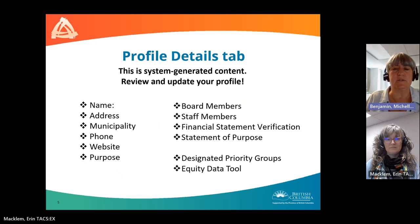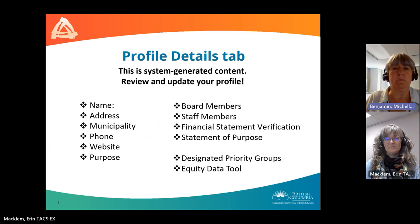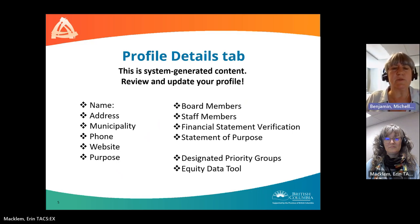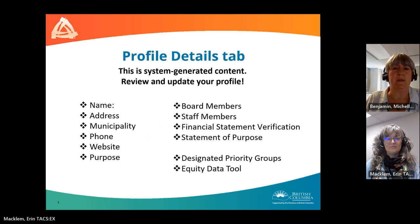We'll start with the profile details tab, the first tab in the online application. Information on this tab is self-generated by the system and connected to your organization profile. Review it for accuracy, and if anything is not correct, go to your profile and update it before completing the application. Any changes to your address must be submitted by email to the BC Arts Council at bcartscouncil.gov.bc.ca. As part of this review process, make sure your board and staff member lists are up to date. Confirm that you have uploaded signed financial statements for the two most recently completed fiscal years. Update your profile with your organization's statement of purpose — for non-profits, this would be a PDF of your organization's constitution. This is required prior to submitting your application. Confirm the date your society annual report was last filed with the registrar of companies.